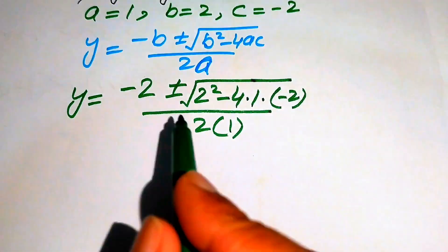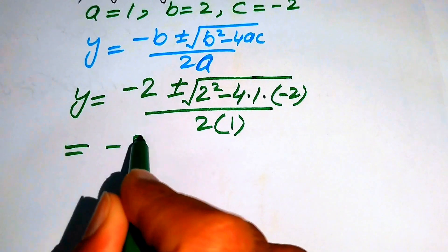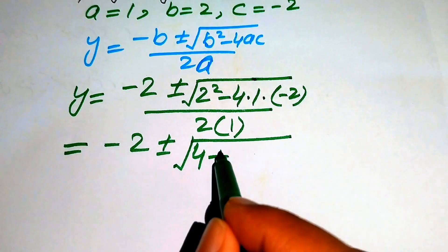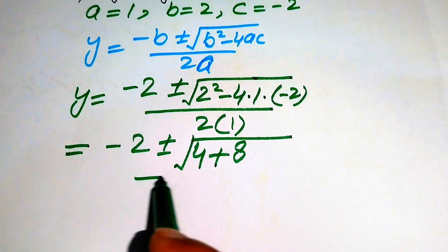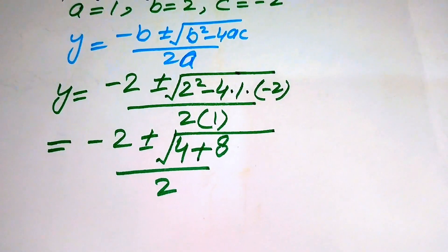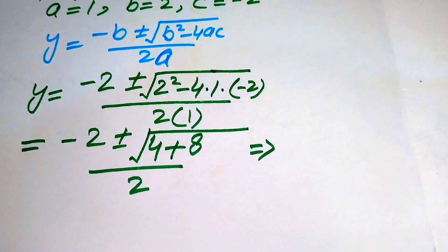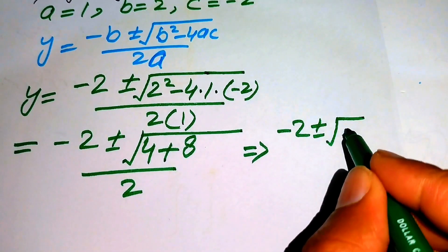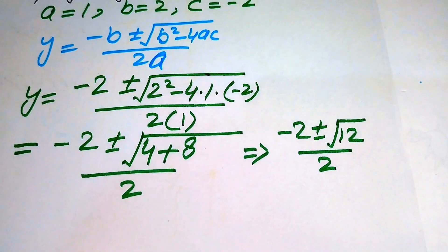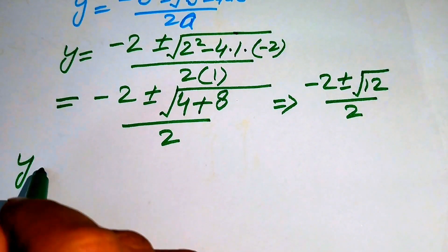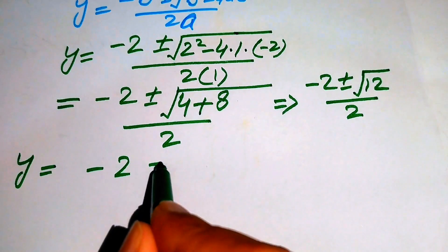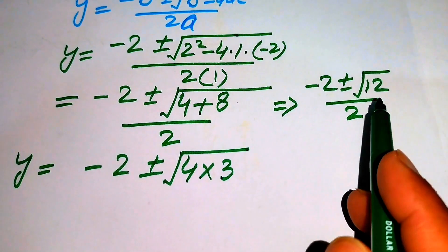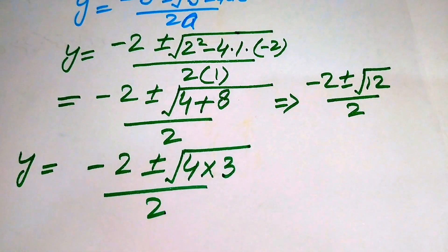Substituting the values, we get y equals to minus 2 plus or minus square root of 2 squared, which is 4, and minus times minus becomes plus, so 4 times 2 is 8, all divided by 2. Simplifying further, we get minus 2 plus or minus square root of 4 plus 8, which equals 12, divided by 2. We write 12 as 4 times 3.